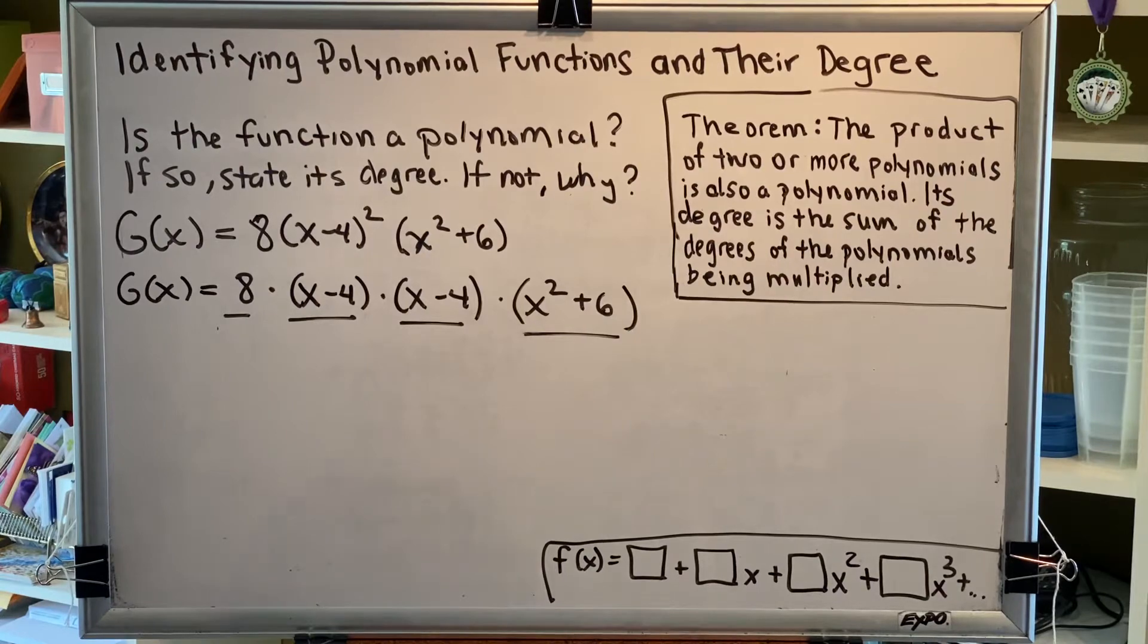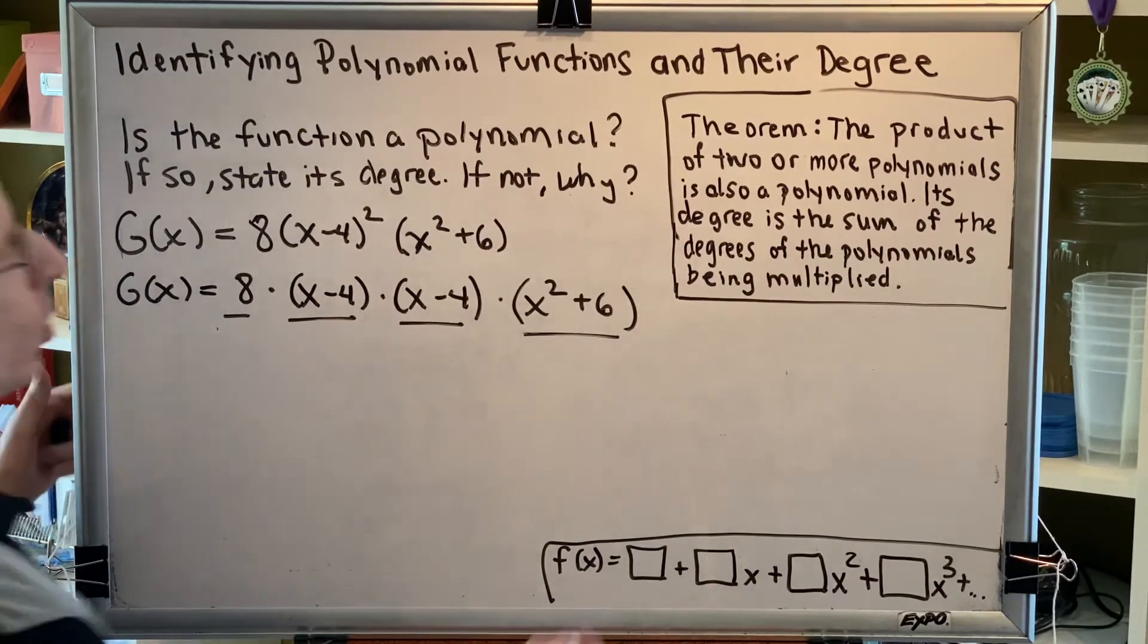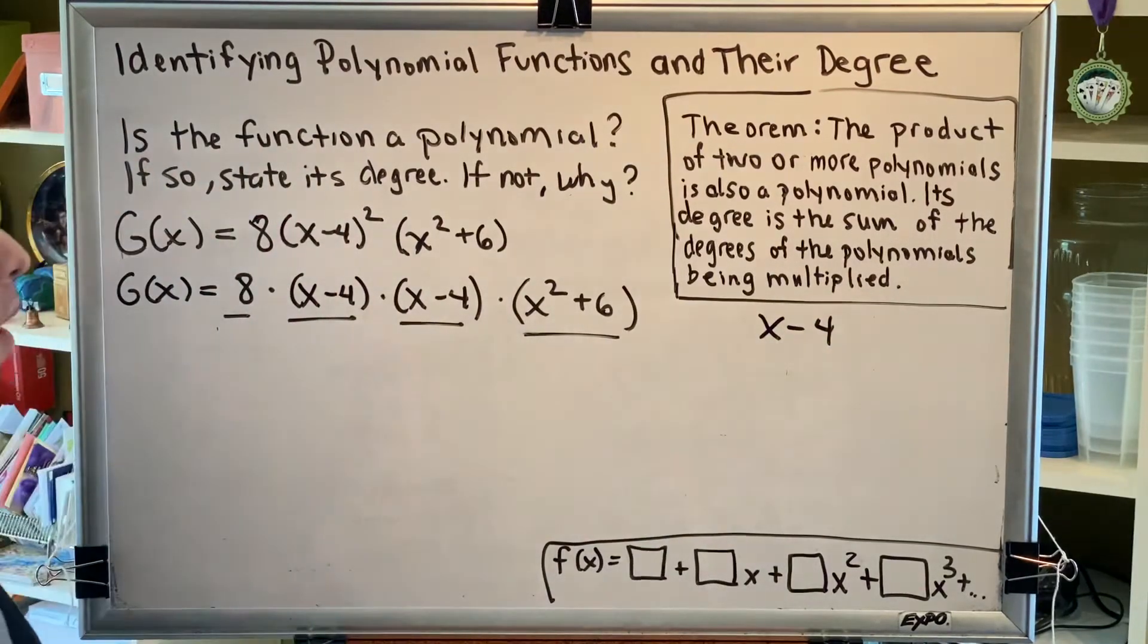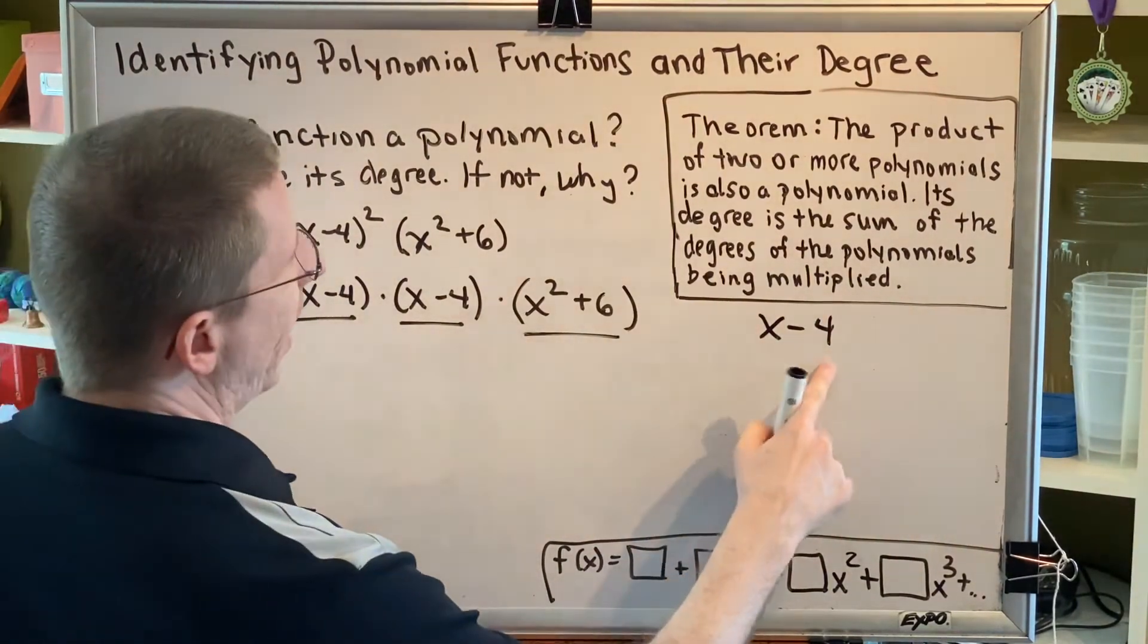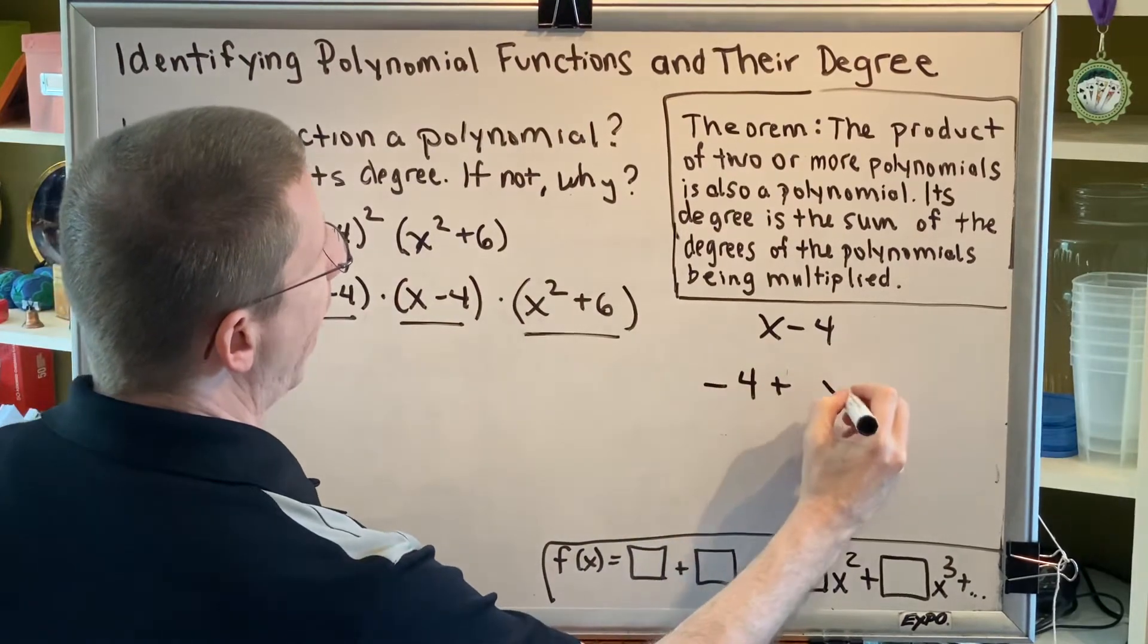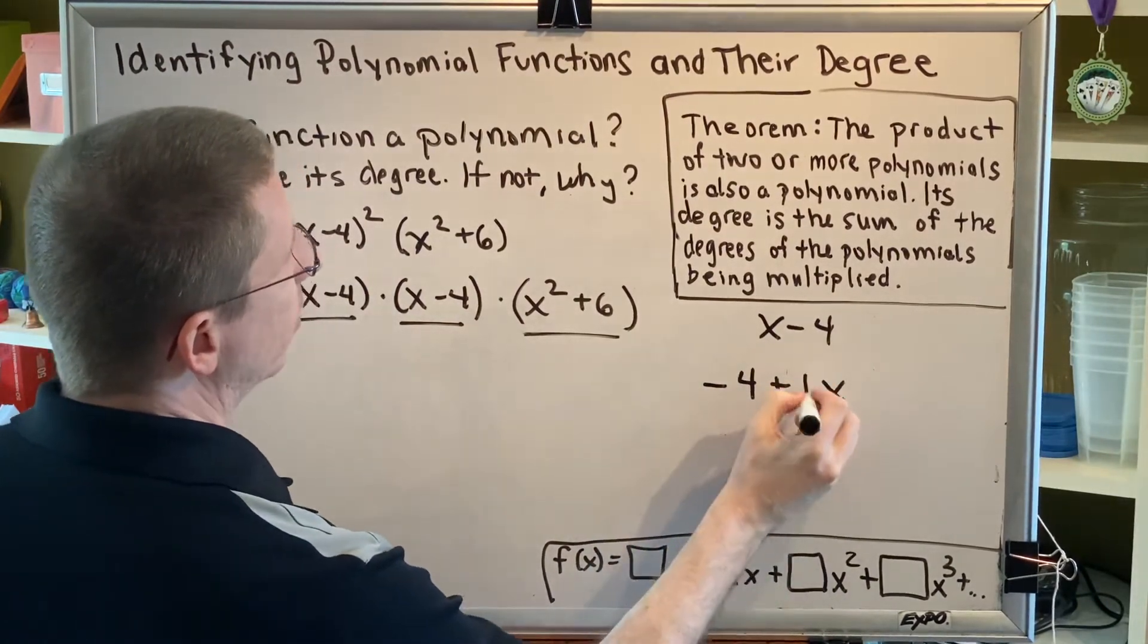So let's start with the first one, which is x minus 4. You can rewrite x minus 4 by swapping the order of the terms. The 4 is negative, so if we move that to the front, this would be negative 4 plus x. And the coefficient of x is 1.